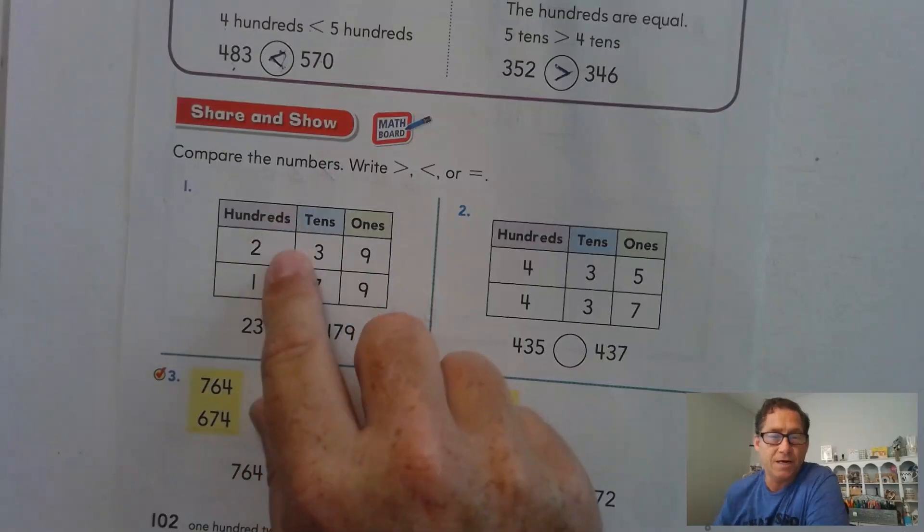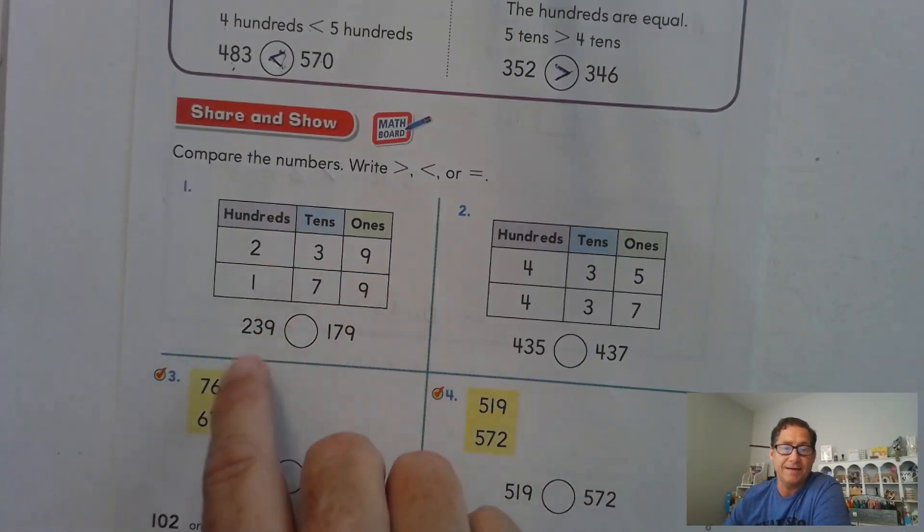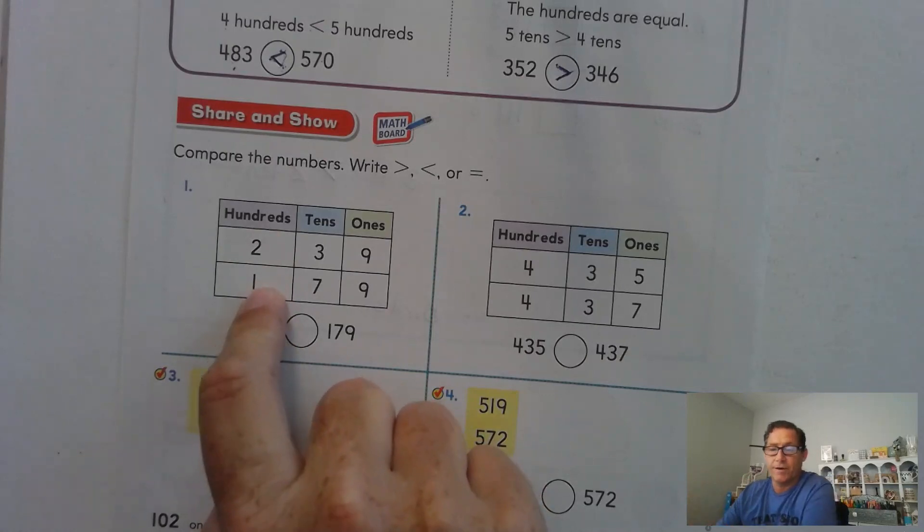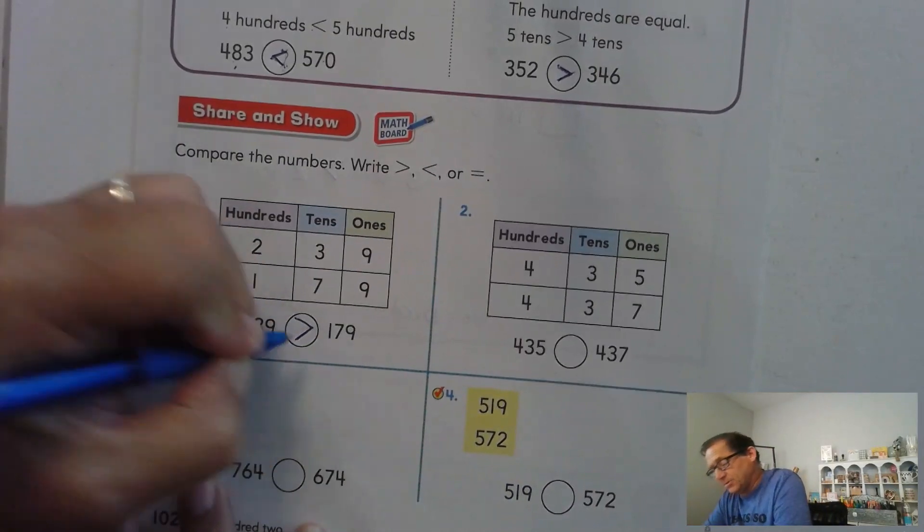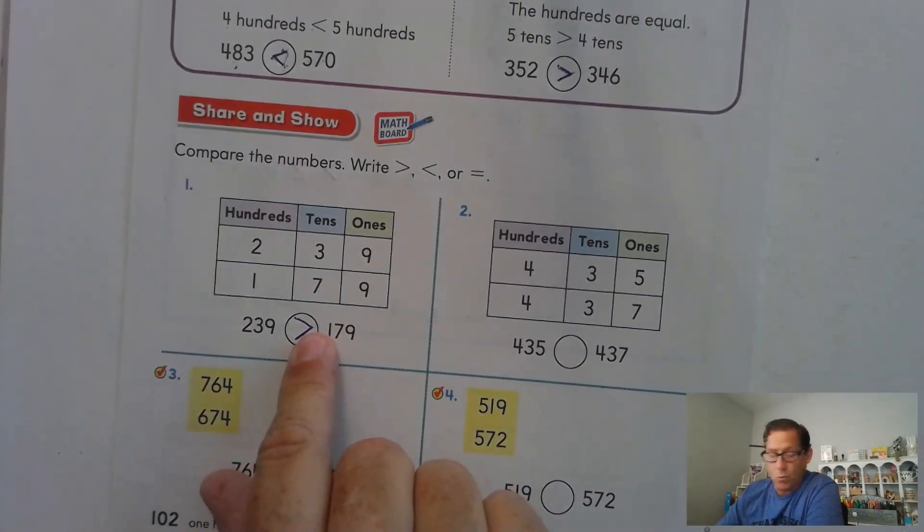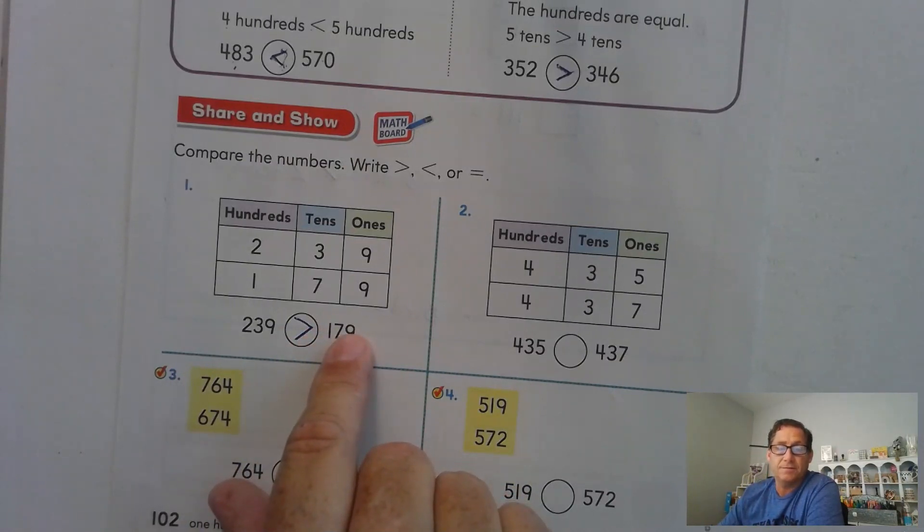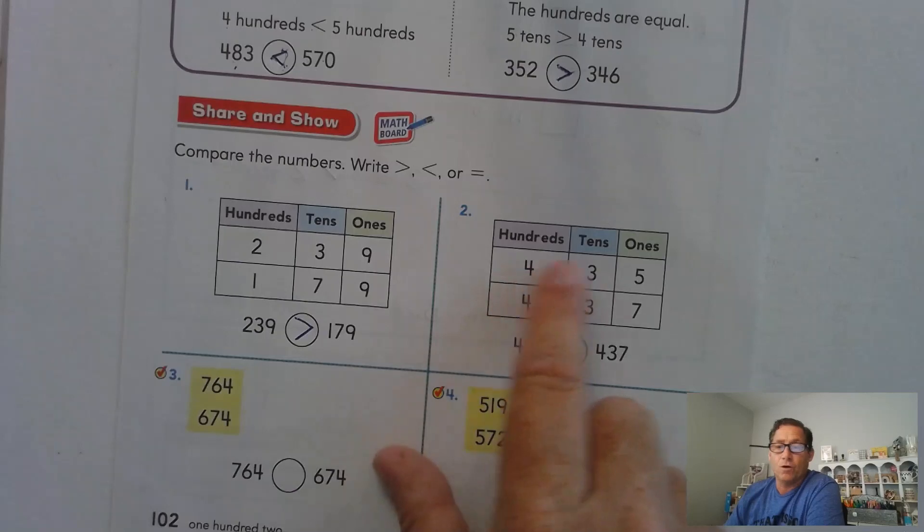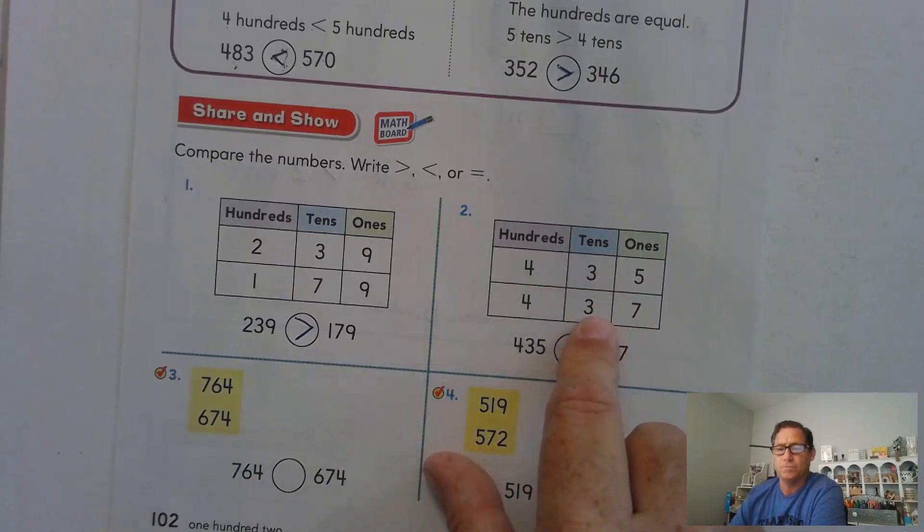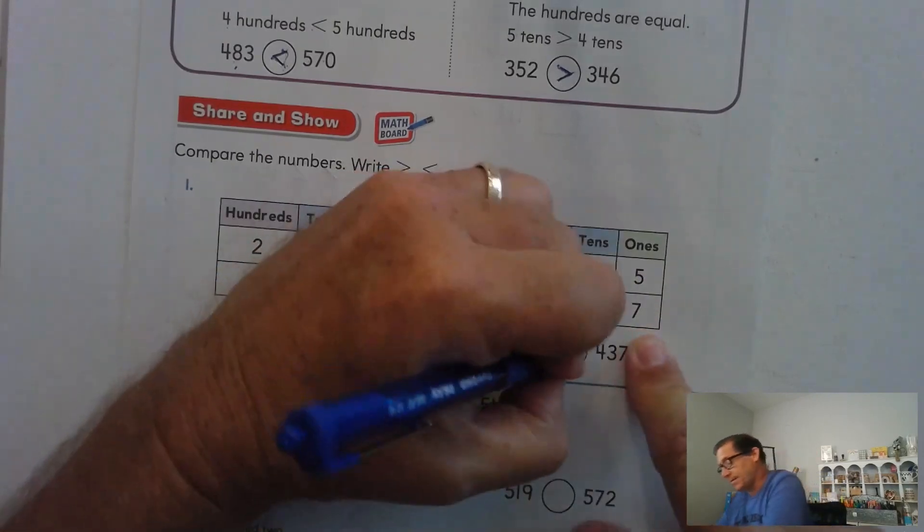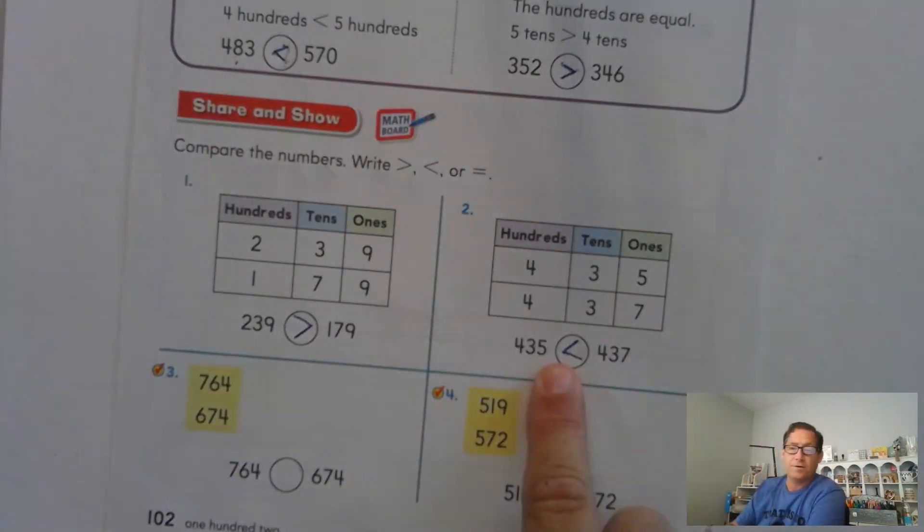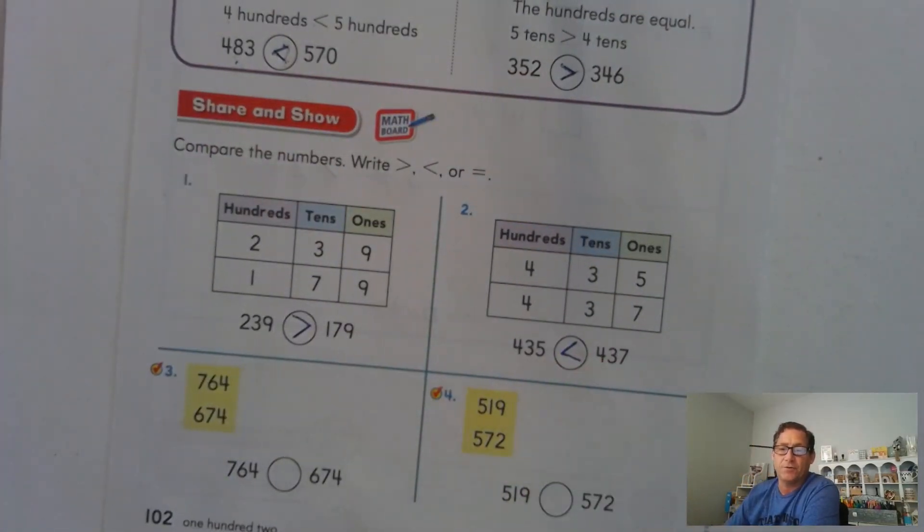All right. So let's look at this one. 239 compared to 179. If we compare just the hundreds, we already know which one's the larger number, 239. So 239 is larger than 179. The point points towards the smaller value. 435, 437. 4 hundreds, 4 hundreds. Let's go to the next number. 3 tens, 3 tens. 5 ones, 7 ones. Well, 5 is smaller than 7. So 435 is less than 437.